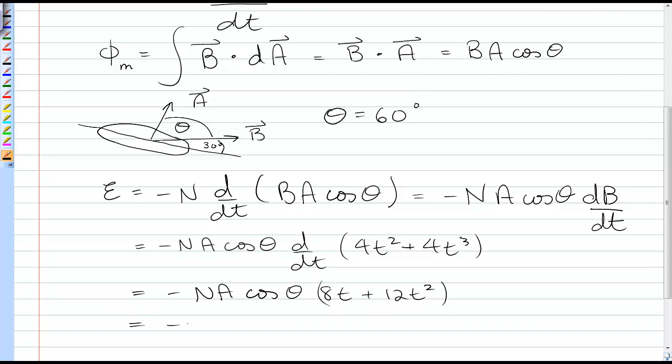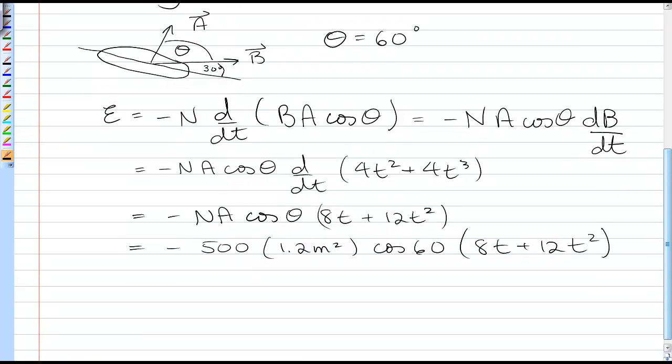And if we were to put our numbers in, we would have 500 for n, 1.2 square meters for the area, cos of 60, and then 8t plus 12t squared. Now if you wanted to know the induced EMF at any instant in time, you would simply sub in the time that you were asked for.